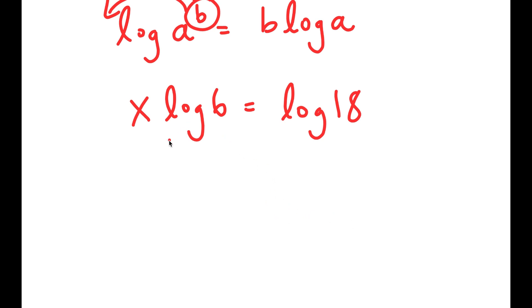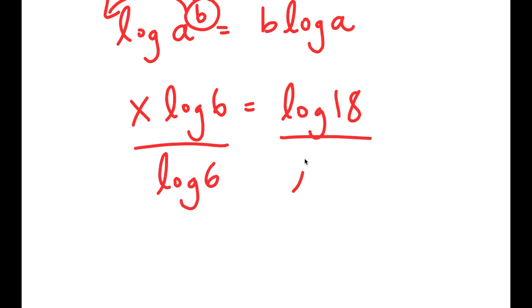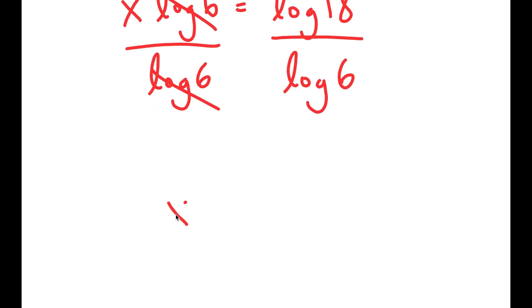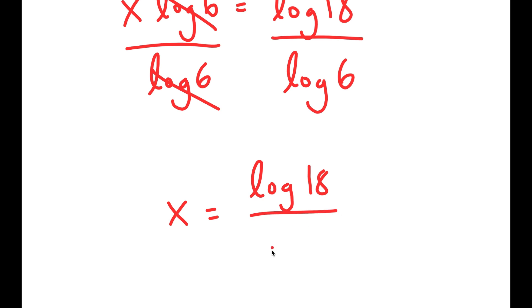From here, I'm going to divide both sides by log 6. So these two cancel out, and I get x is equal to log 18 over log 6.